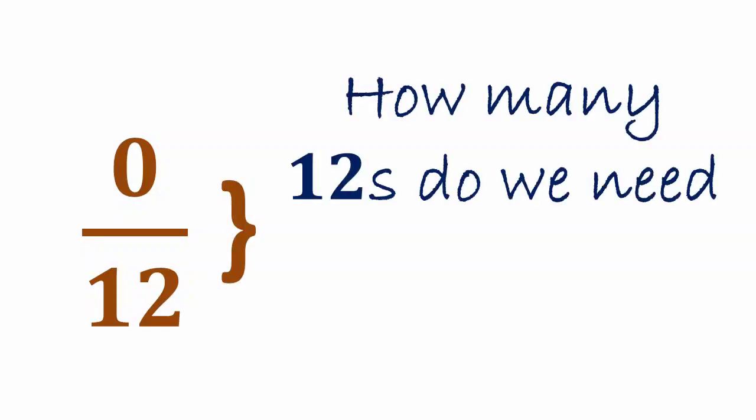Now if we take 0 by 12, so what does this mean? It means how many 12's do we need to make a 0?